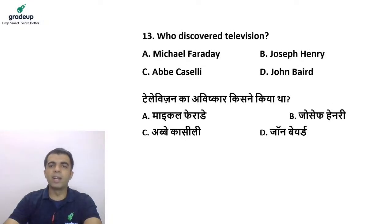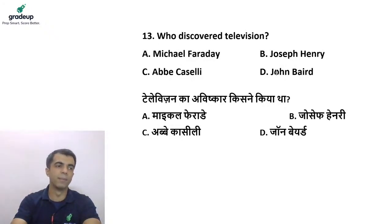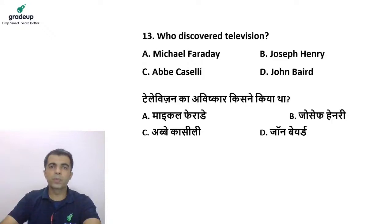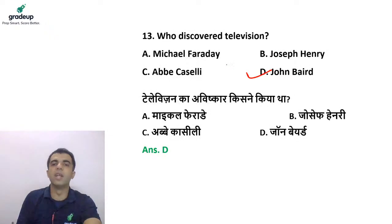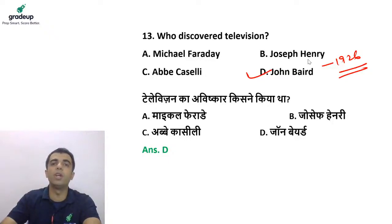Next question: who discovered the television? Options are Michael Faraday, Joseph Henry, Abbe Cassilly, and John Baird. In your exam, chronological order of inventions may also be asked. The answer is option D — John Baird, who discovered the mechanical color television in 1926. He was of Scottish origin and used the principle of reflection of light, a photo cell, and a video amplifier.